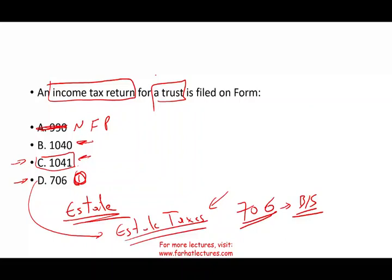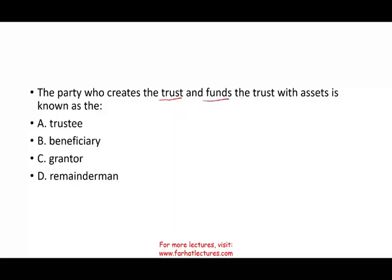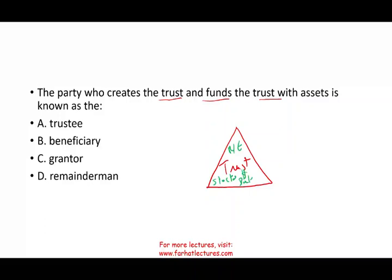The party who creates the trust and funds the trust with assets is known as what? Who creates this trust and funds it — putting in stocks, money, bonds, real estate, gold — anything? That someone is called the grantor. The grantor transfers money, assets, resources, bonds, and stocks to the trust from their personal account, creating this legal entity called the trust.